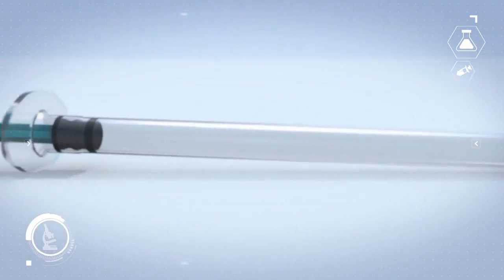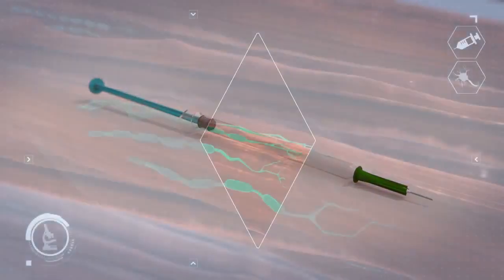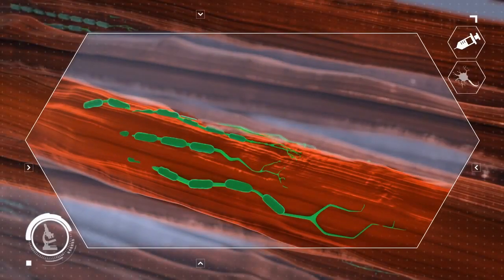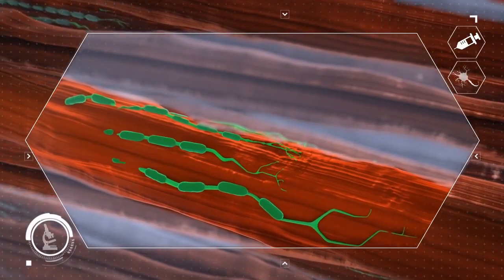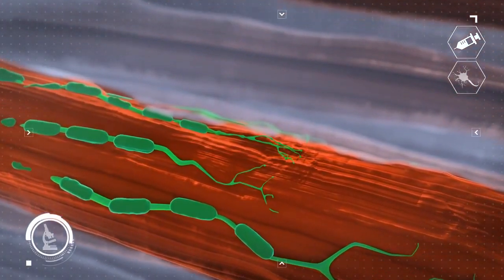Dilution of botulinum toxin A complexes with isotonic saline leads to dissociation of these complexes resulting in the release of the free neurotoxin during the reconstitution phase prior to injection into target tissues. Injection into the targeted muscle is key.